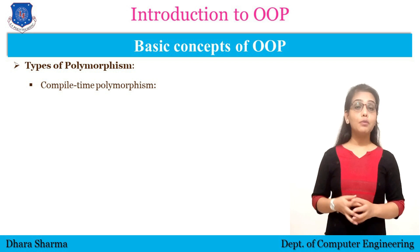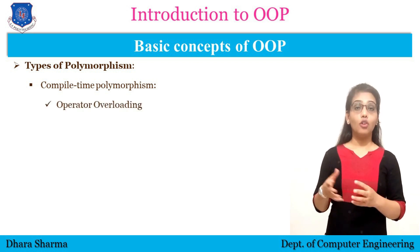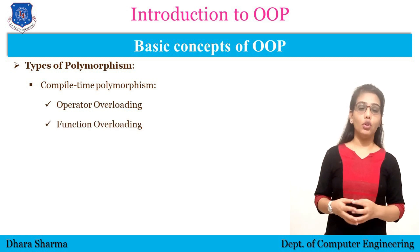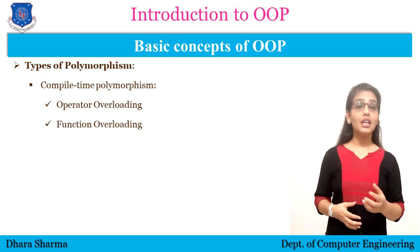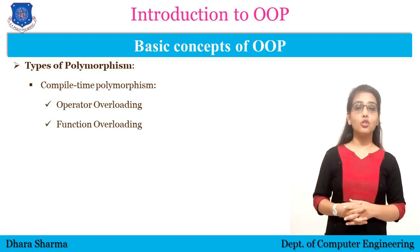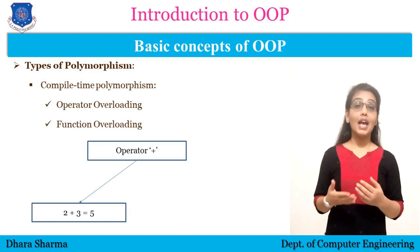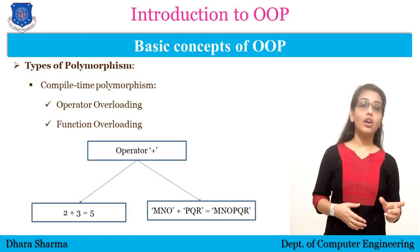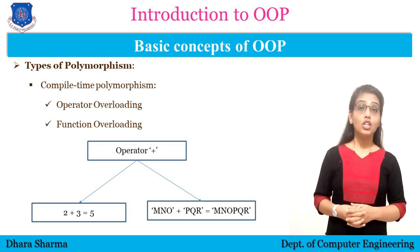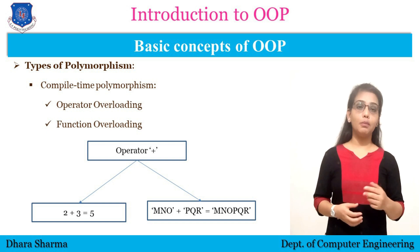There are two types of compile time polymorphism: operator overloading and function overloading. How can the same thing be used for different purposes? The plus operator can be used to add two numbers, as well as to concatenate or append two strings. So the operator is the same but it can be used for different purposes.